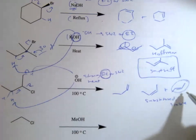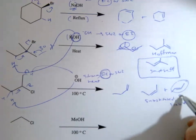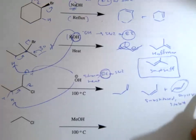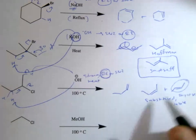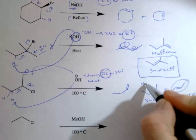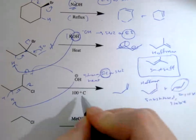That one would be the more stable, so this is Saitsev. Again, because we have a narrow nucleophile, that would be favored. This is Hoffman, and that would be favored if we had something like tert-butoxide.